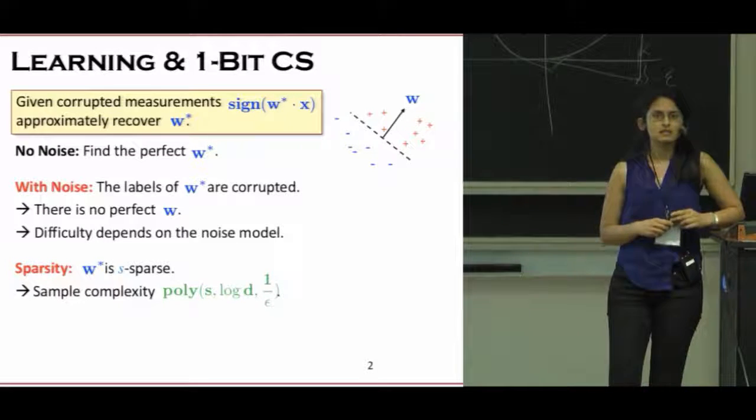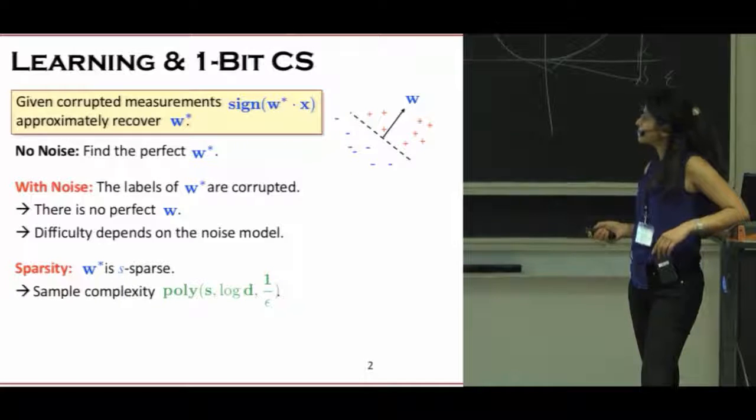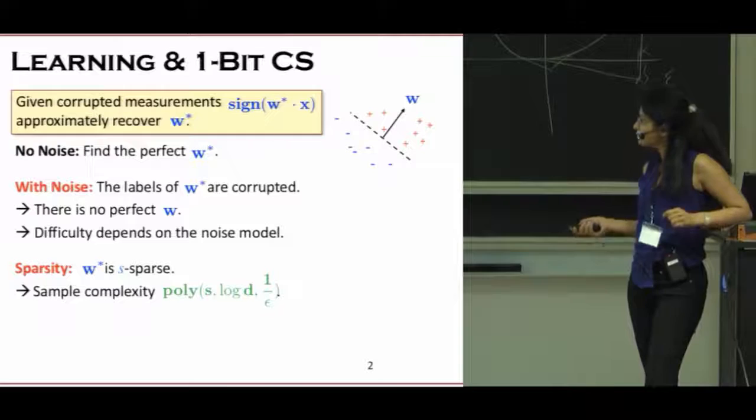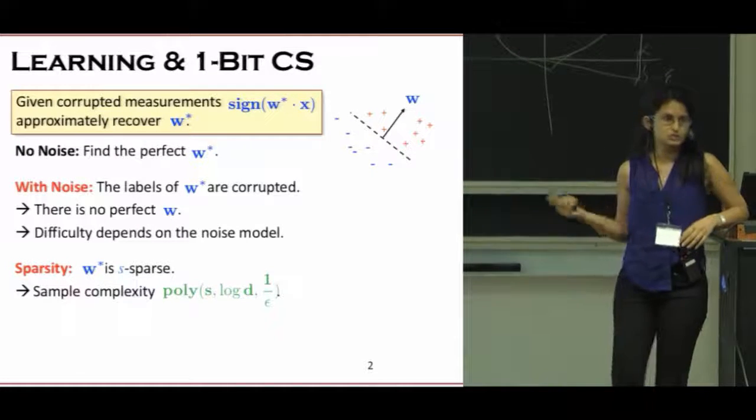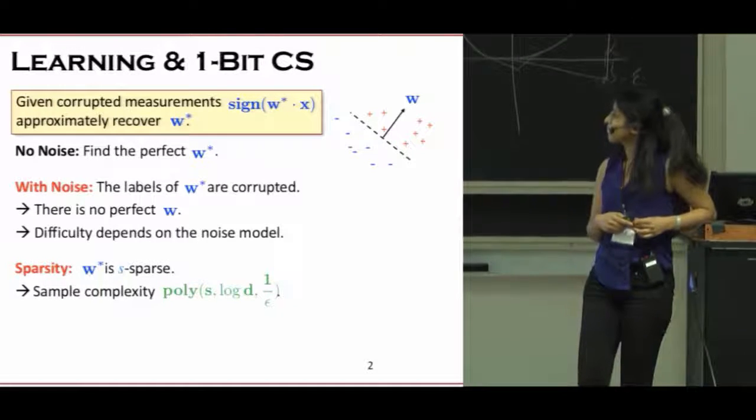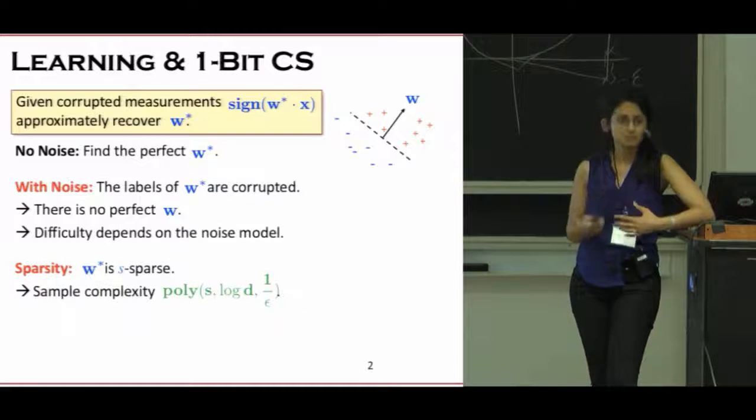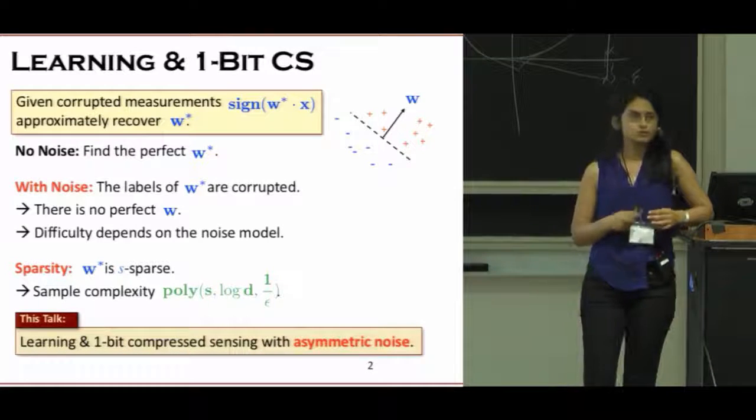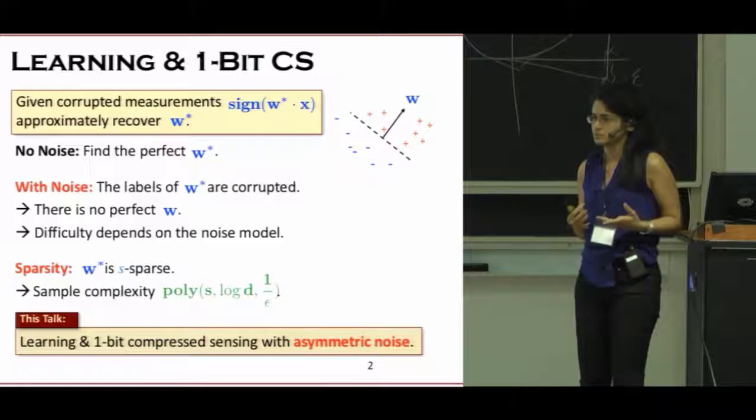In 1-bit compressed sensing, we are also concerned with sparsity. For example, if W star is guaranteed to be S-sparse, then we want a number of samples that depends polynomially in S and only logarithmically in the ambient dimension D. Both in learning theory and signal processing, this problem has been mainly considered for symmetric noise models. So in this work, we are going to go beyond symmetric noise models and focus on what happens when you have asymmetric noise.